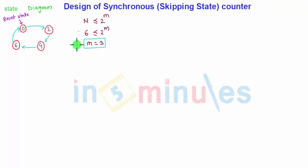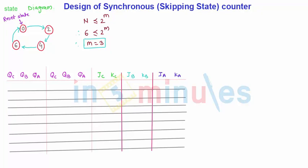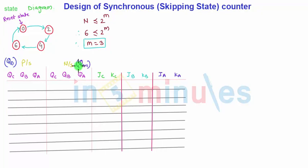I prepared a table with 3 flip-flops having outputs QC, QB, QA taken in reverse order. The present state is QN and the next state is Q(N+1). I am going to use JK flip-flops, so for the 3 flip-flops the inputs are JC, KC for flip-flop C; JB, KB for flip-flop B; and JA, KA for flip-flop A. These inputs will be formed with the help of the excitation table.